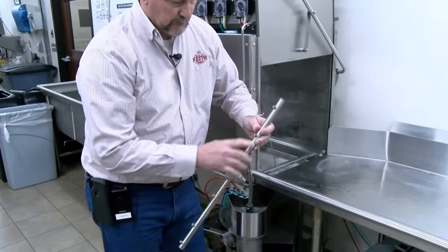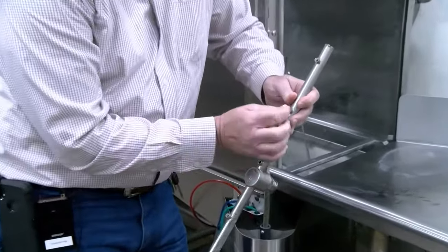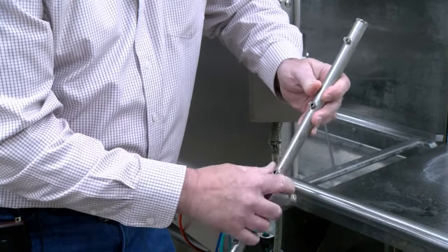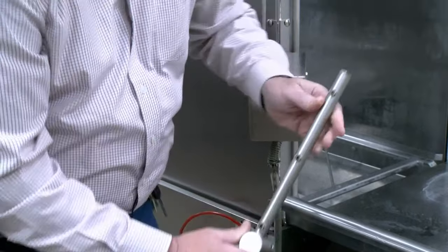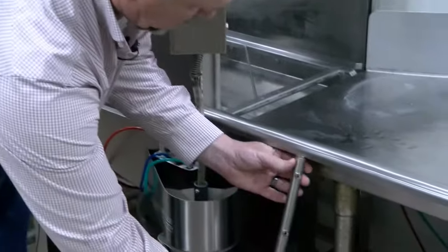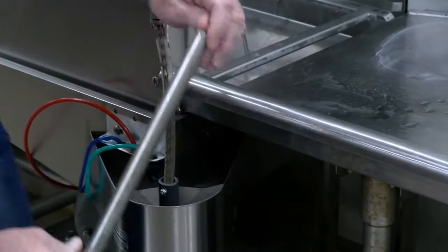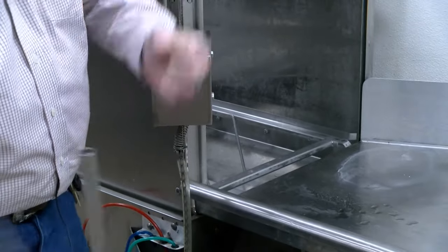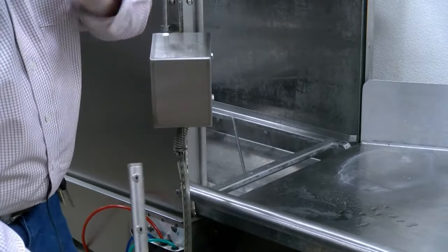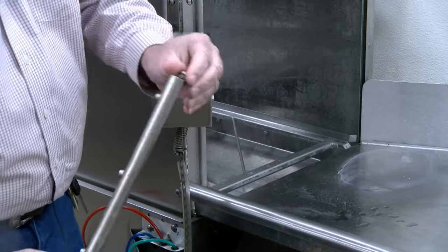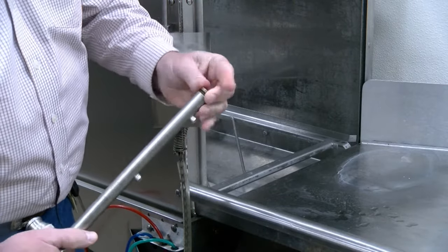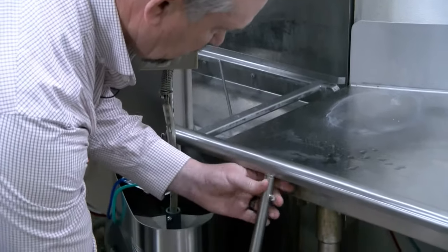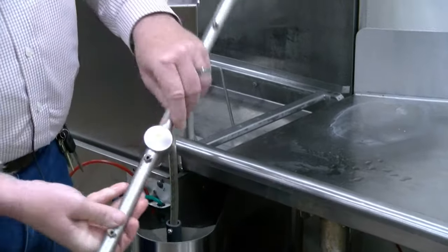If you do notice that one of these wash jets are plugged, get a toothpick or whatever you can get in there to clean that out. Well, now you've just put it back in the wash arm. You've got to get it out of there. You take it over to the sprayer. Spray both ends out. Take both end caps out. Put it back. Make sure that it's tightened securely. Put it back in the dish machine.